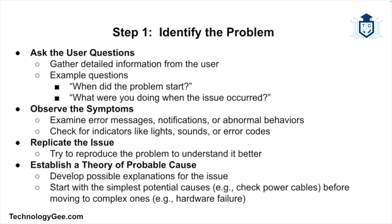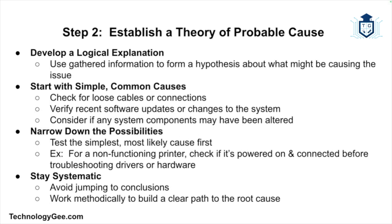For example, if a user's computer won't start, check whether it shows any lights, sounds, or error codes. Then try to replicate the issue to better understand it. During this step you should also begin establishing a theory of probable cause — developing ideas about what might be wrong, starting with the simplest possibilities. For instance, if a computer won't power on, check the power cable before assuming a hardware failure.